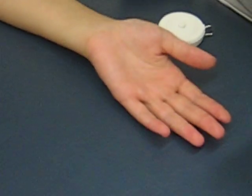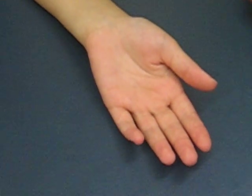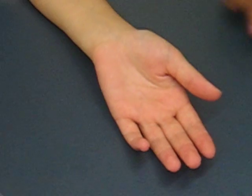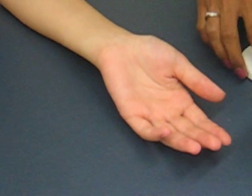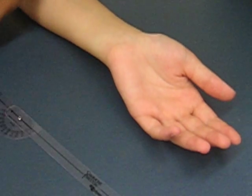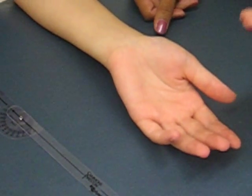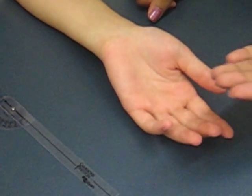Now we're going to move on to thumb metacarpophalangeal flexion. The patient is going to be sitting with their forearm resting on the plinth. We're going to be using a goniometer, but I'm going to have the patient first flex their thumb in this motion.